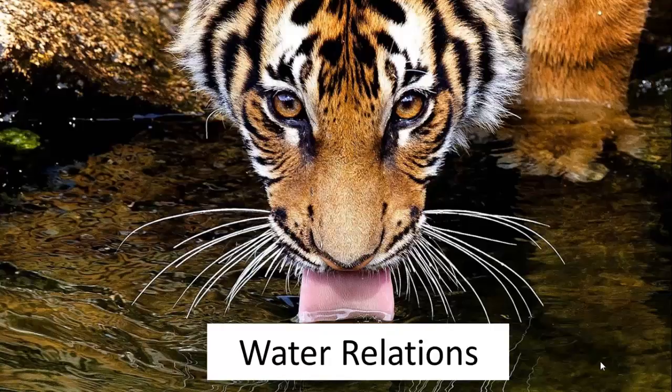Okay, so now we kind of ended with temperature and talking about climate and things like that. Now we're getting into water relations and how animals and plants deal with water and variations within fluctuating water levels.